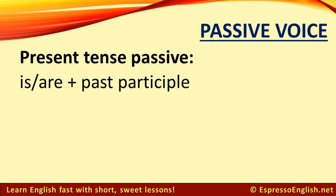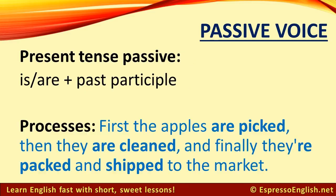To form the passive voice in the present tense, use is or are plus the past participle. We often use the present tense passive for processes. For example, first the apples are picked, then they are cleaned, and finally they are packed and shipped to the market.